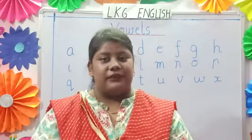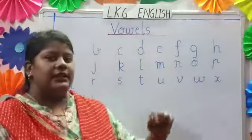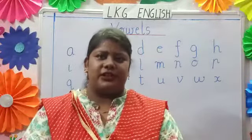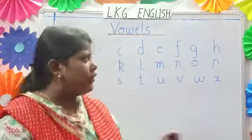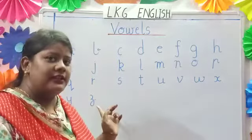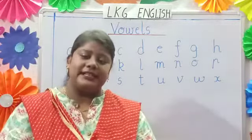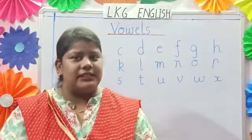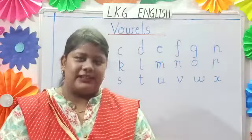We will learn about vowels. Can you tell me, children, how many letters are there? From A to Z, there are 26 letters. How many letters? 26 letters.